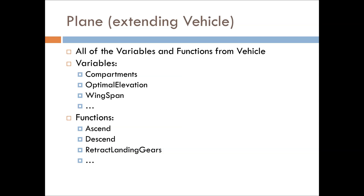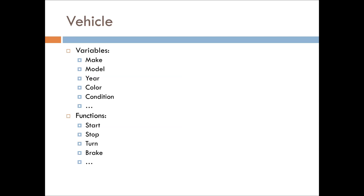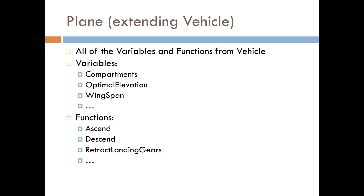Let's move to Plane. A plane is going to have all the variables and functions from Vehicle — make, model, year, start, stop, turn — and then additional variables: compartments for storage or different sections of the plane, optimal elevation, wingspan to define how far the wings go from one end to the other. Functions: ascend, descend, retract landing gears, rudder, and such.